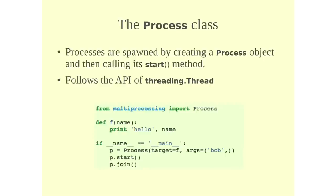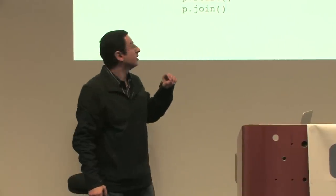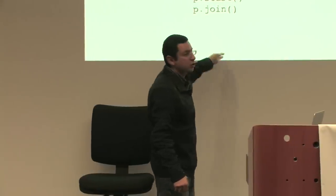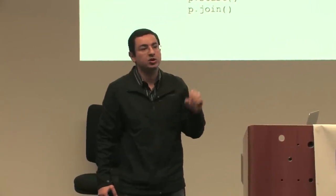Create an instance of process. And then you pass it the target, which is your callable, which in this case is our f function. And then when you create the instance, the process is ready, but it hasn't started yet. So you start it by calling the start method. And to wait for it to finish, you need to call the join method. And that stops the program waiting for your process to finish. So any code further down after the join will not execute until your process has finished executing.